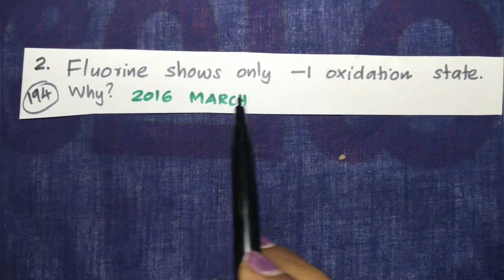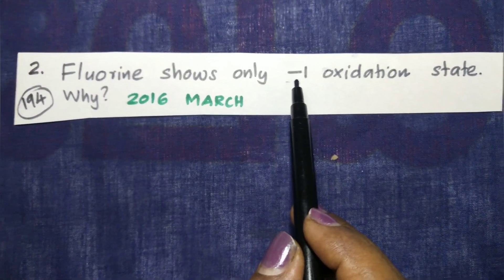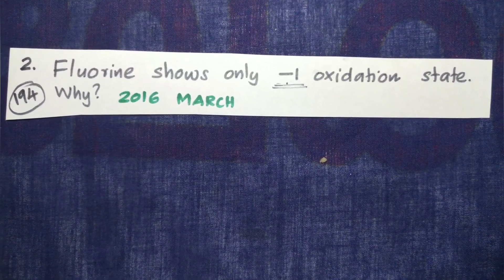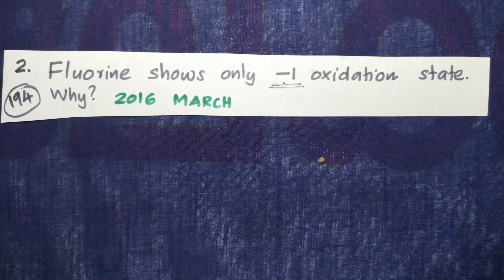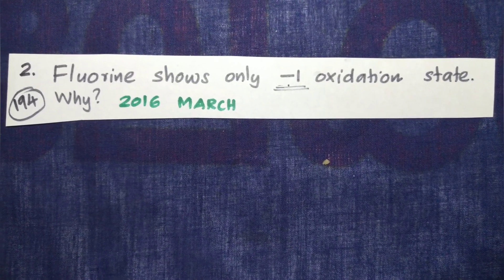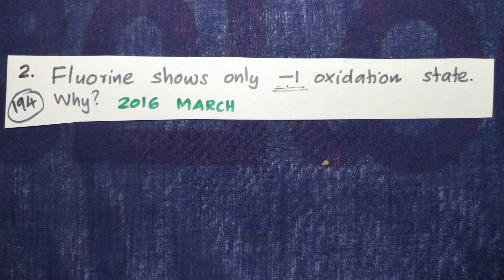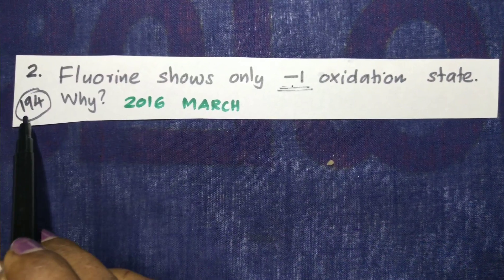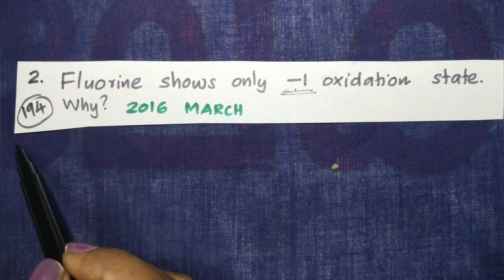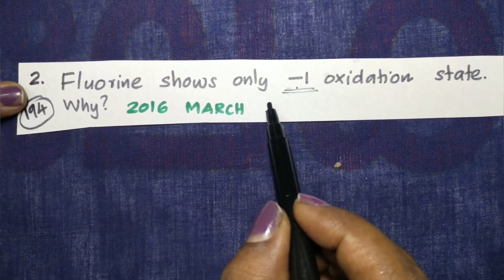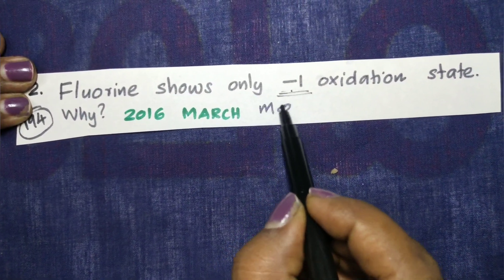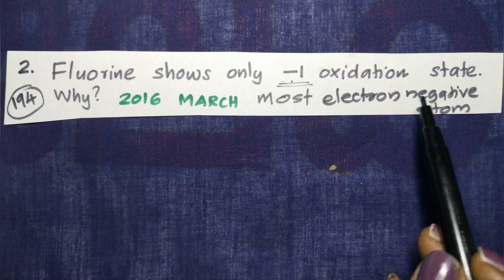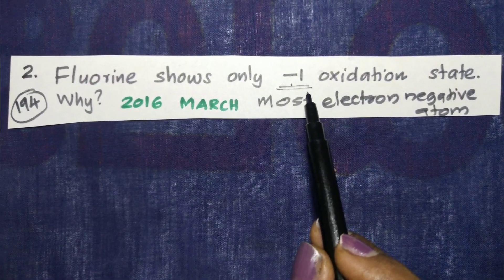Chlorine has only minus 1 oxidation state. Fluorine is the most electronegative element. Because it is the most electronegative, it shows only a negative oxidation state.